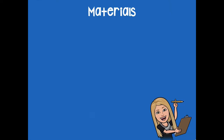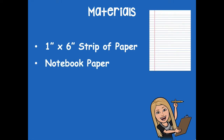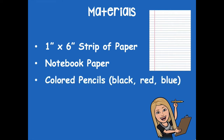The materials you'll need for this lesson are a one-by-one-inch by six-inch strip of paper, a piece of notebook paper, and some colored pencils — you'll need black, red, and blue. Also make sure you grab a ruler. So make sure you have all those things before we get started.